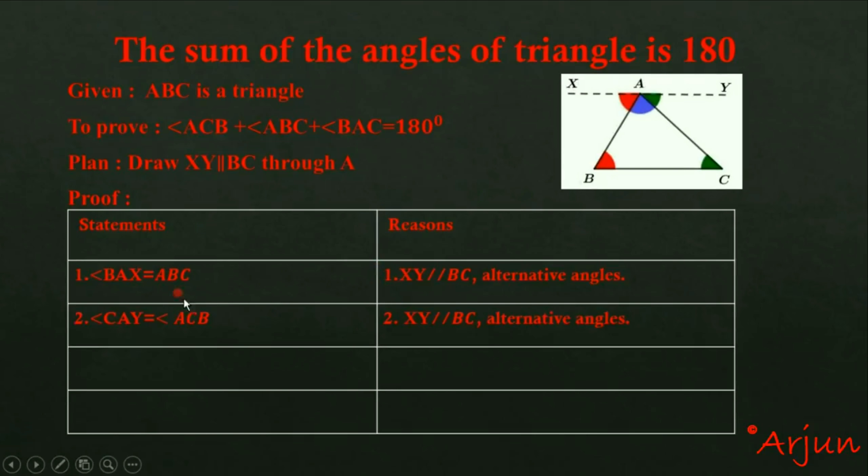Statement number two: angle CAY equals angle ACB. Same process - XY is parallel to BC, so AC is a transversal line. The opposite interior angles are alternate angles, which are equal.